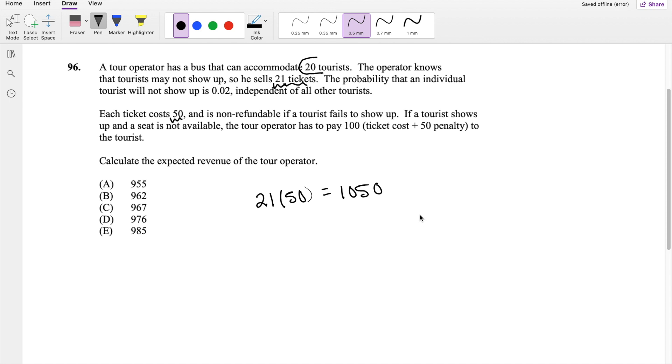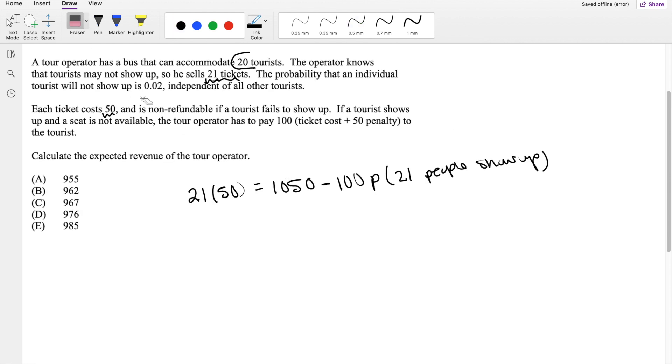But however, if someone shows up, if all 21 people show up, he loses $100. You have to give $100 to the 21st person because they didn't get to see whatever this tour is. So minus the 100, that's the probability that 21 people show up, right? That's the probability we're looking for. And this is equal to revenue.